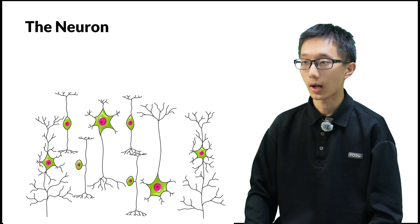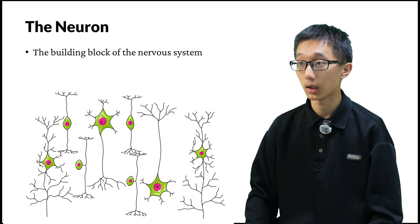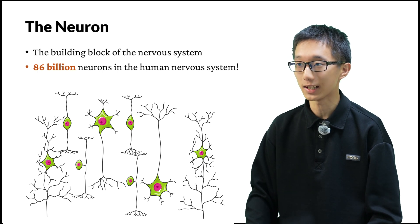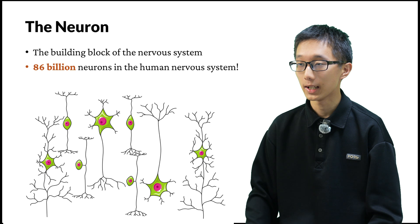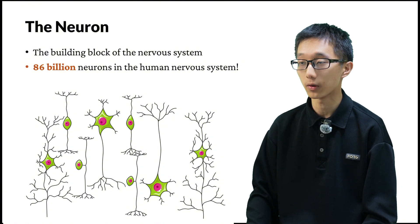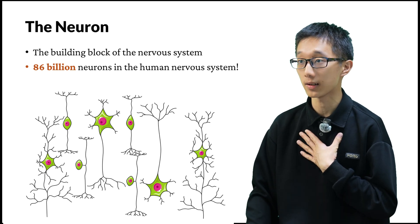The neuron. The neuron is, first and foremost, a type of cell. It is the basic building block of the nervous system. There are actually 86 billion neurons in the whole human nervous system. It is one of the greatest numbers in all mammals and even in all animals, and that makes us one of the most intelligent species on planet Earth.